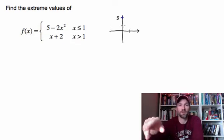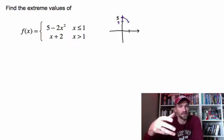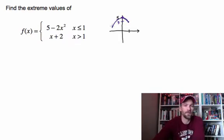For values that are greater than 1, we're going to use the equation x plus 2. The weird thing that's going to happen here is we need to know what's going on at 1. Is that point included? Does it exist? What's going on there? So we're just going to check it out.